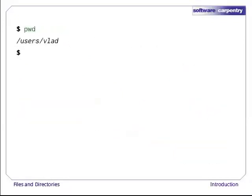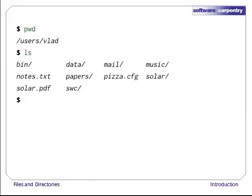If we run ls -f /data, we get a different answer, because /data is an absolute path. The leading slash tells the computer to follow the path from the root of the file system, so it always refers to exactly one directory, no matter where we are when we run the command. What if we want to change our current working directory? We can use cd, followed by a directory name, to change our working directory.